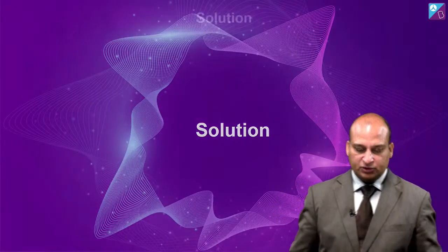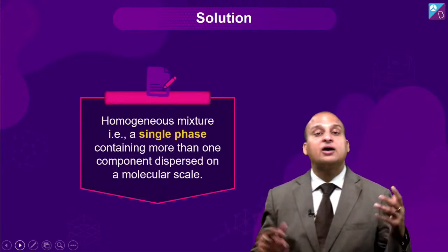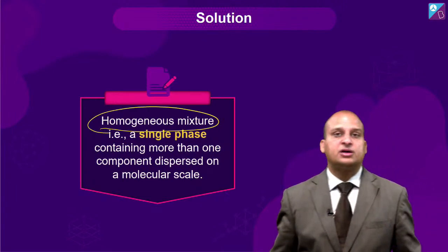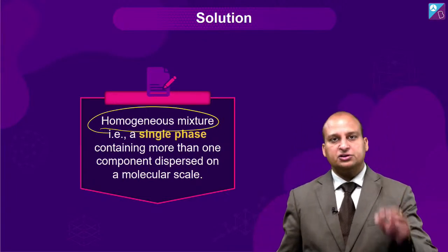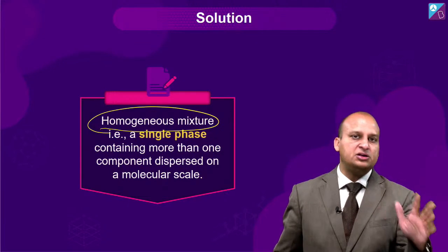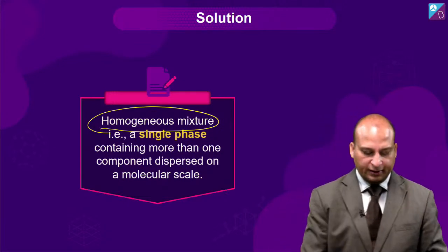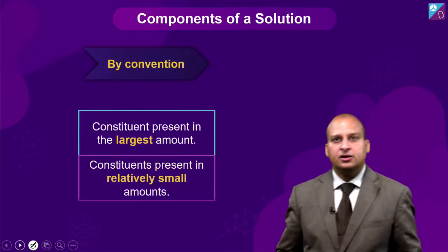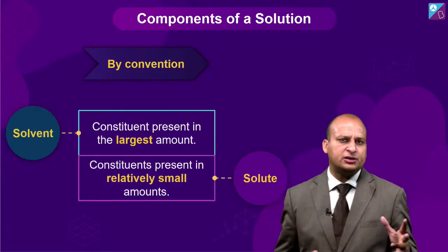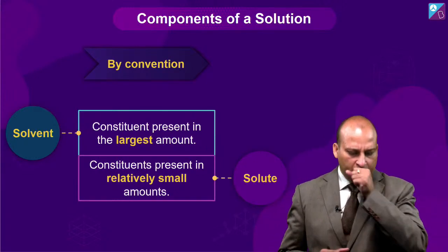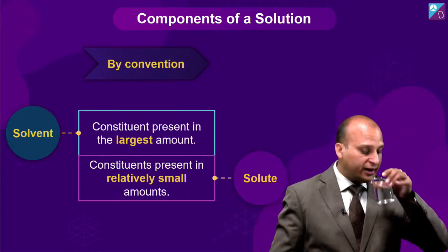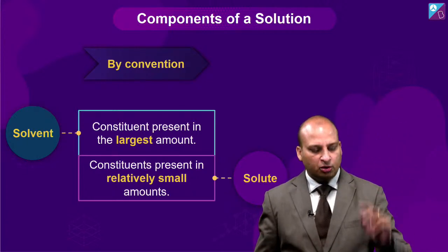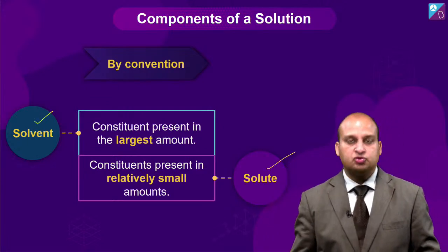So, solution — let us quickly discuss some theoretical points. What is a solution? It is a homogeneous mixture. Homogeneous means that the concentration is the same in each part of the solution. Now the question arises: in what terms do we measure concentration? For that we need to talk about the two components — one is solvent, the other is solute.